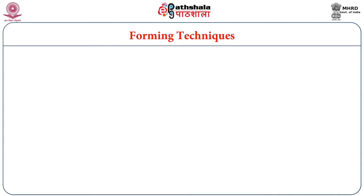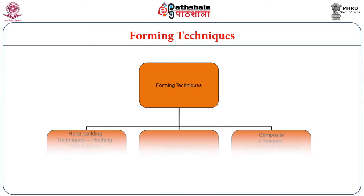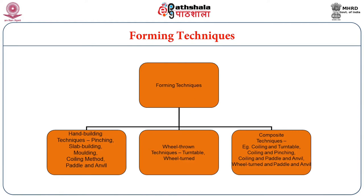Forming techniques include hand building, wheel-thrown, and combination techniques. Hand techniques involve pinching, slab building, molding, coiling, and the paddle and anvil technique. Wheel-thrown pottery uses a wheel for turning. Composite technologies involve combinations such as coiling and turntable, coiling and pinching, coiling and paddle-and-anvil, and wheel-thrown and paddle-and-anvil technique. These combinations ensure that the pottery form takes a very uniform outer shape.